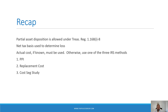To recap: partial asset dispositions are allowed under Treasury Regulations 1.168(i)-8. This regulation allows taxpayers to recognize a loss on the disposal of a portion of an asset. The net tax basis is used to determine the loss. If the actual cost is known, it must be used; otherwise the IRS provides three methods to determine the net tax basis: the Producer Price Index, the pro rata replacement cost, or a cost segregation study — with the cost seg study being the best option for most taxpayers.